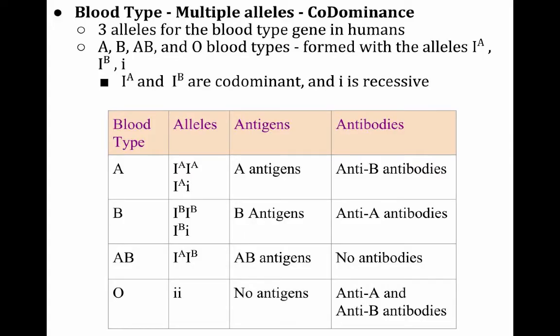So blood type is a trait that shows both multiple alleles and codominance. That means there are three alleles for the blood type gene in humans, and it also shows codominance for some of those alleles.